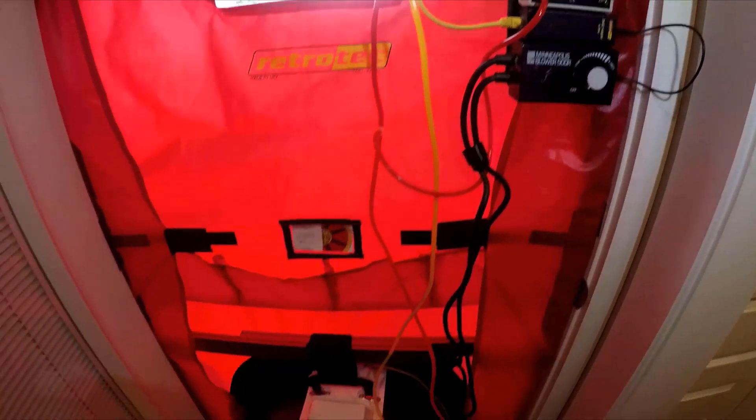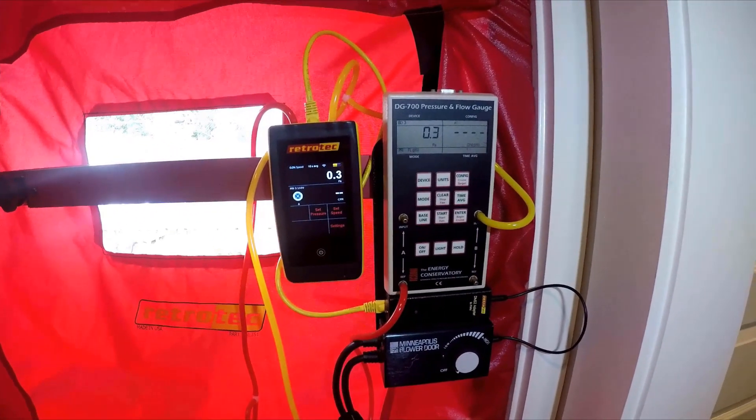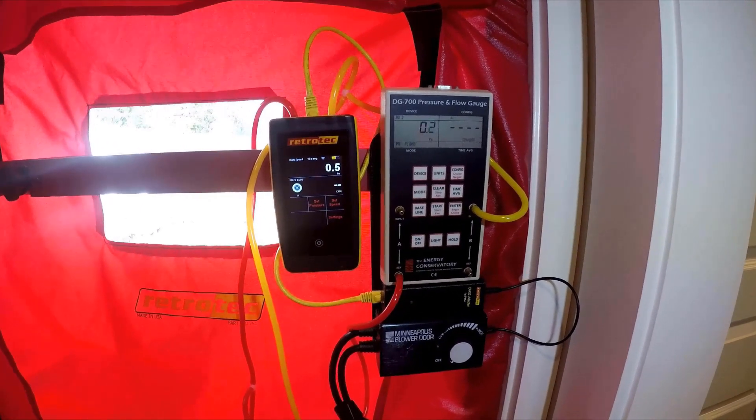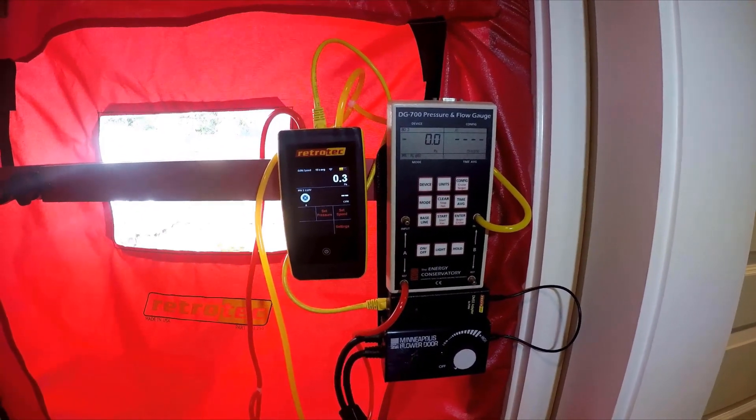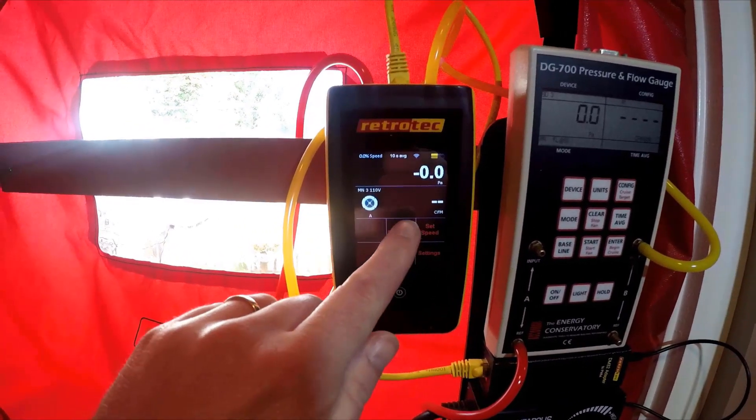So if you notice, we have the fan set up to pressurize the building. And the point of this talk is to show the difference in how you set up your two gauges, the RetroTech versus the TEC. We'll first run this test with the additional hose removed from the DG700.